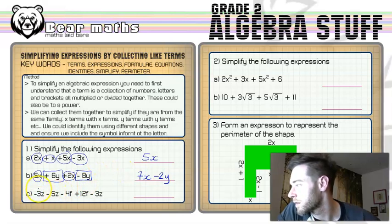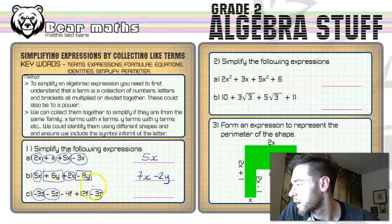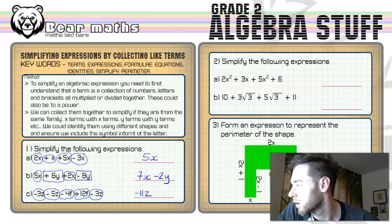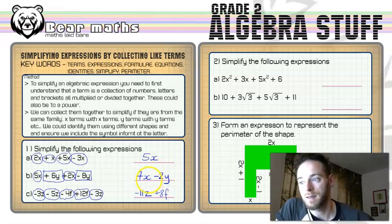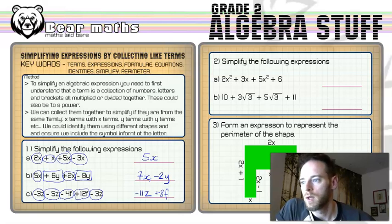And then in part c, we've got minus three z, minus five z, and then minus three z. So minus three, minus five is minus eight, minus three more is minus eleven z. And then we've got the f terms: minus four f plus twelve f gives you plus eight f. I hope all of that makes sense, because that's as basic as it gets. I know algebra will confuse a lot of people, but if you think of it as just a letter representing a number — an unknown thing — that's all it really is.